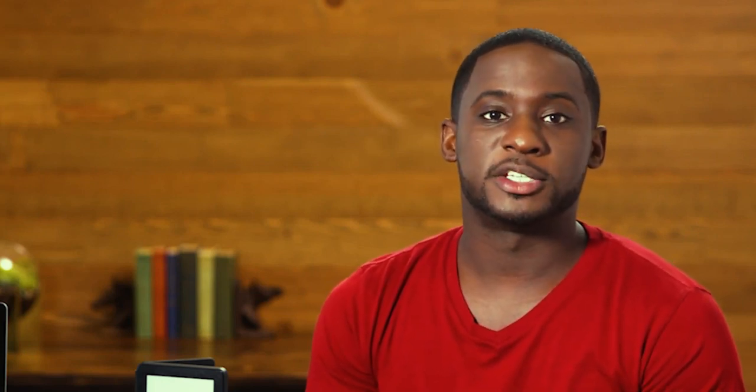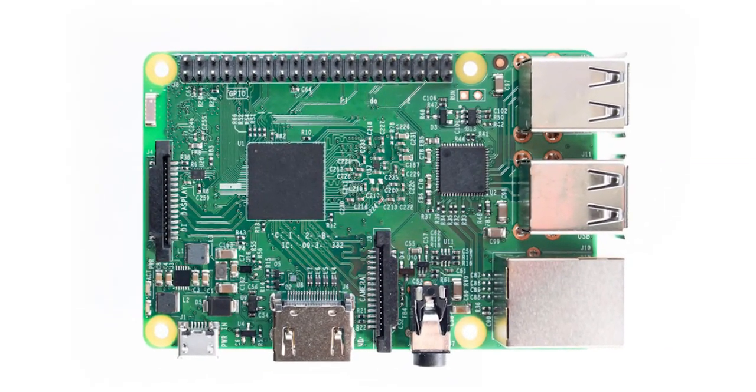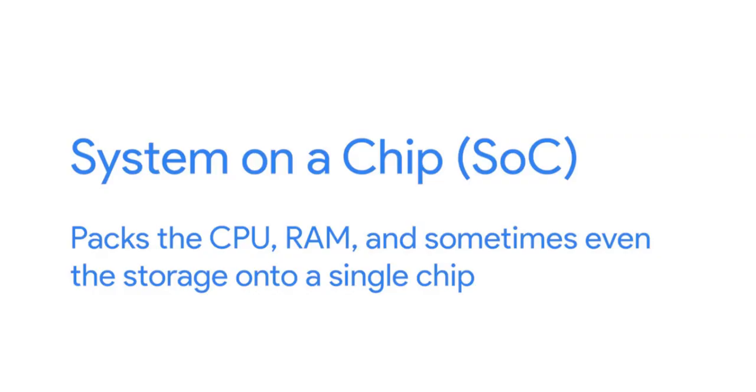The CPU, RAM, and storage might be soldered directly to the device's motherboard. Very small mobile devices use a system on a chip, or SOC. A system on a chip packs the CPU, RAM, and sometimes even the storage onto a single chip. Not only are SOCs small, they use less battery power than if those components were separated.